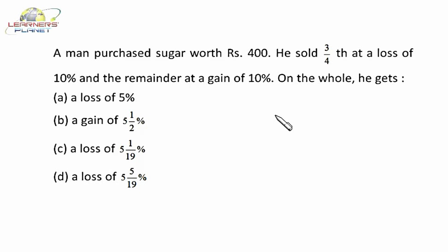Now let's see this question: A man purchased sugar worth Rs. 400. He sold three-fourths at a loss of 10% and the remainder at a gain of 10%. That means one-fourth at a gain of 10%. On the whole, he gets profit or loss? What we have to find out.